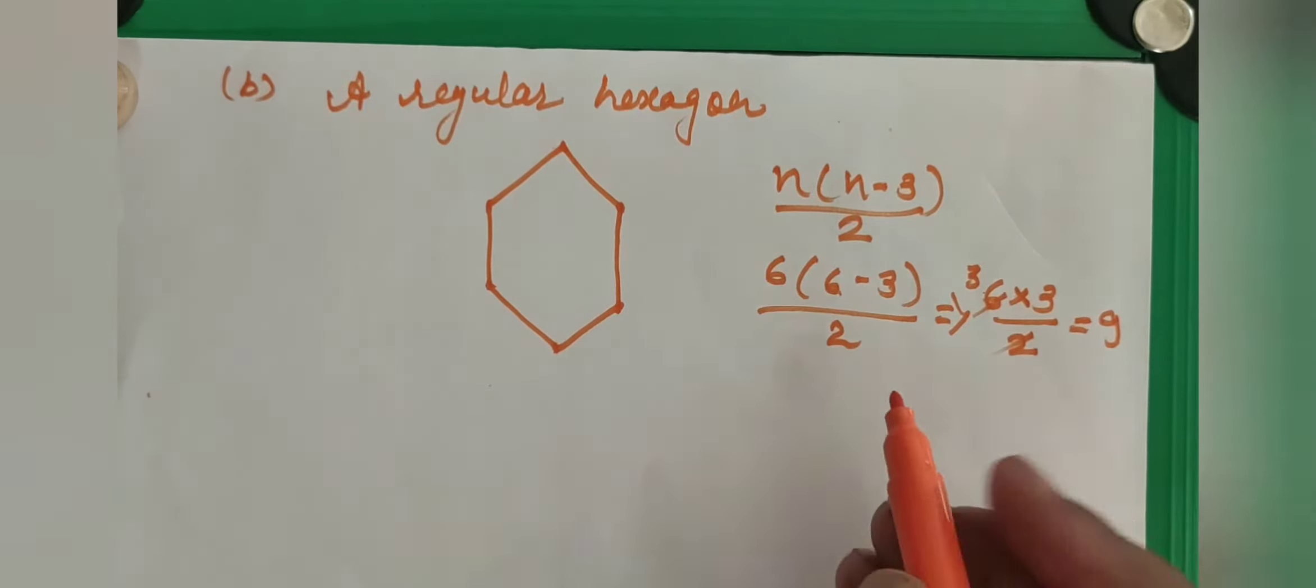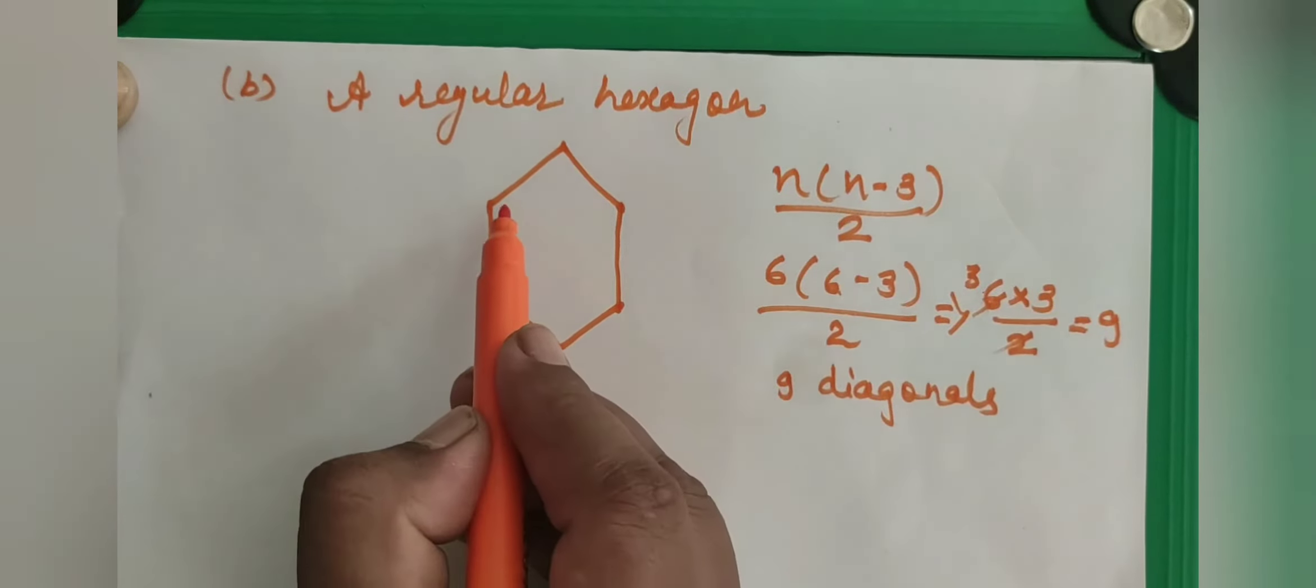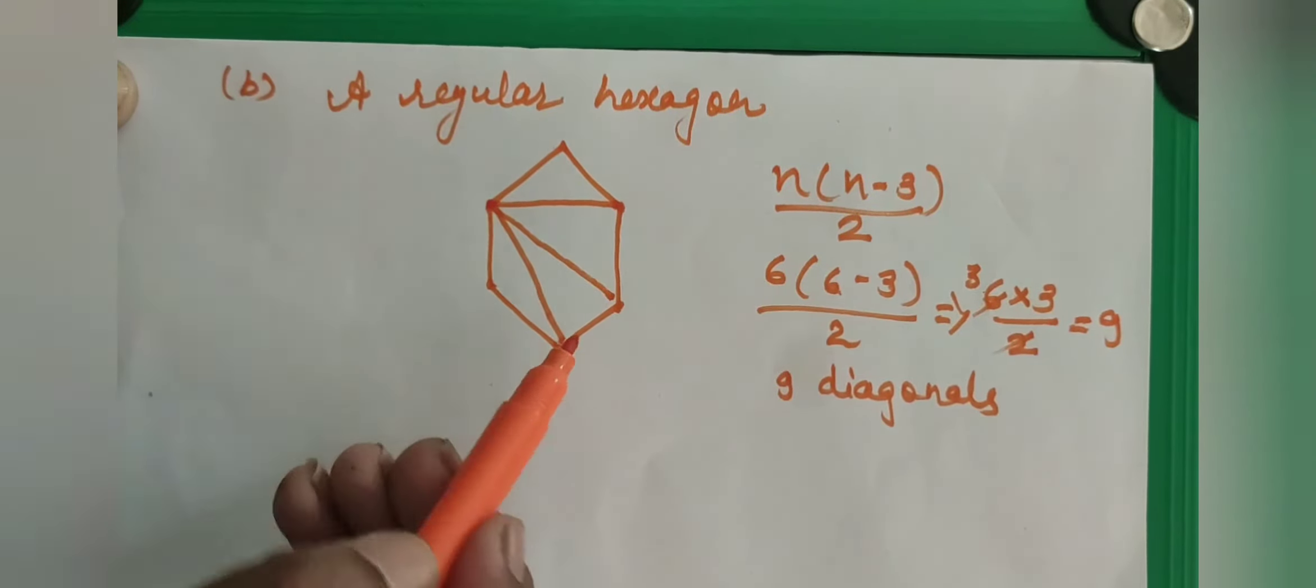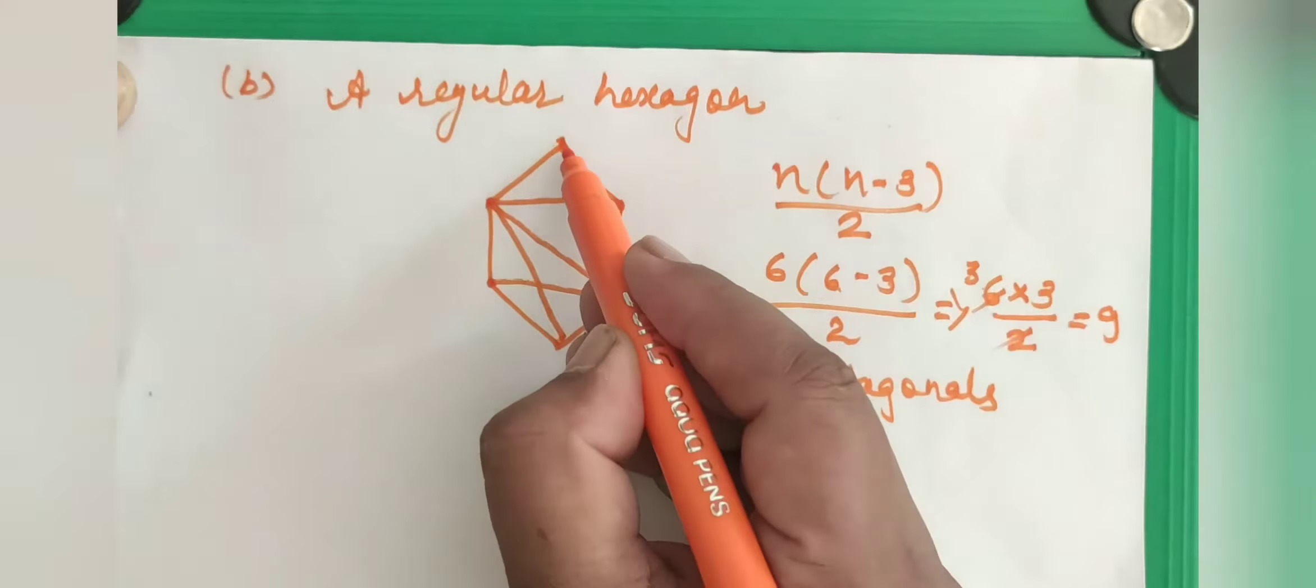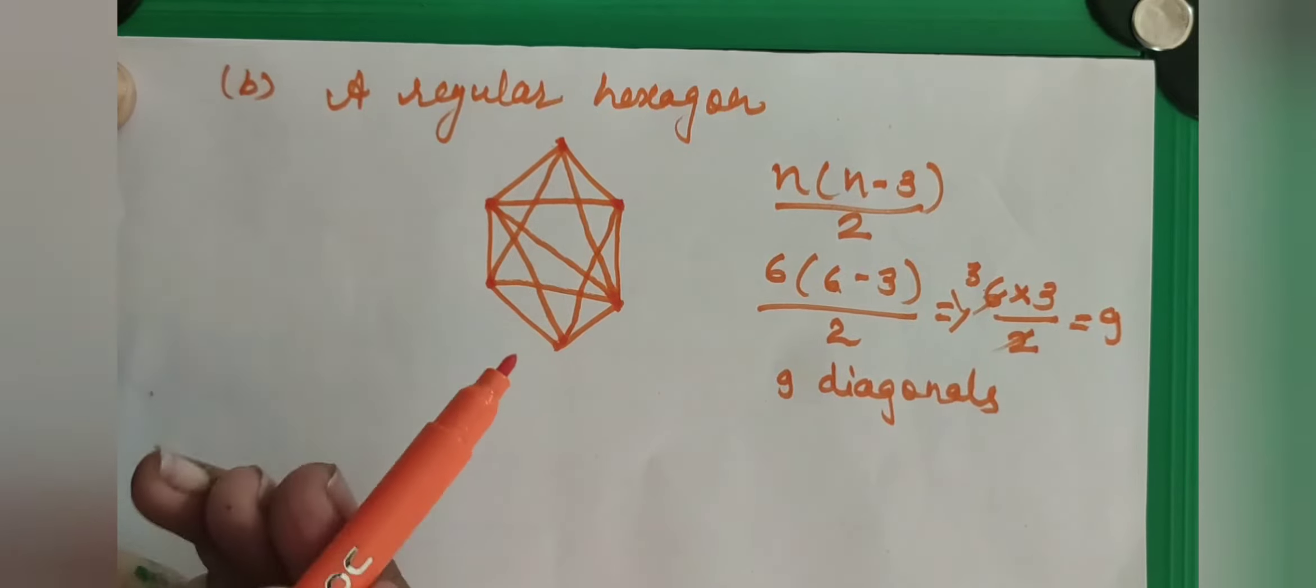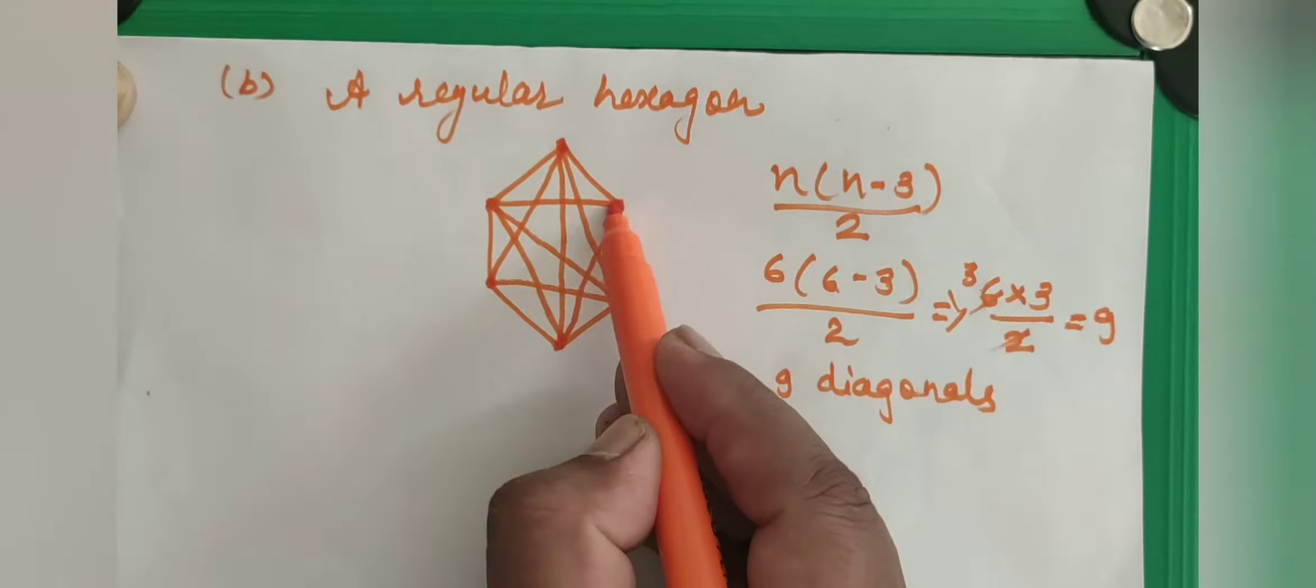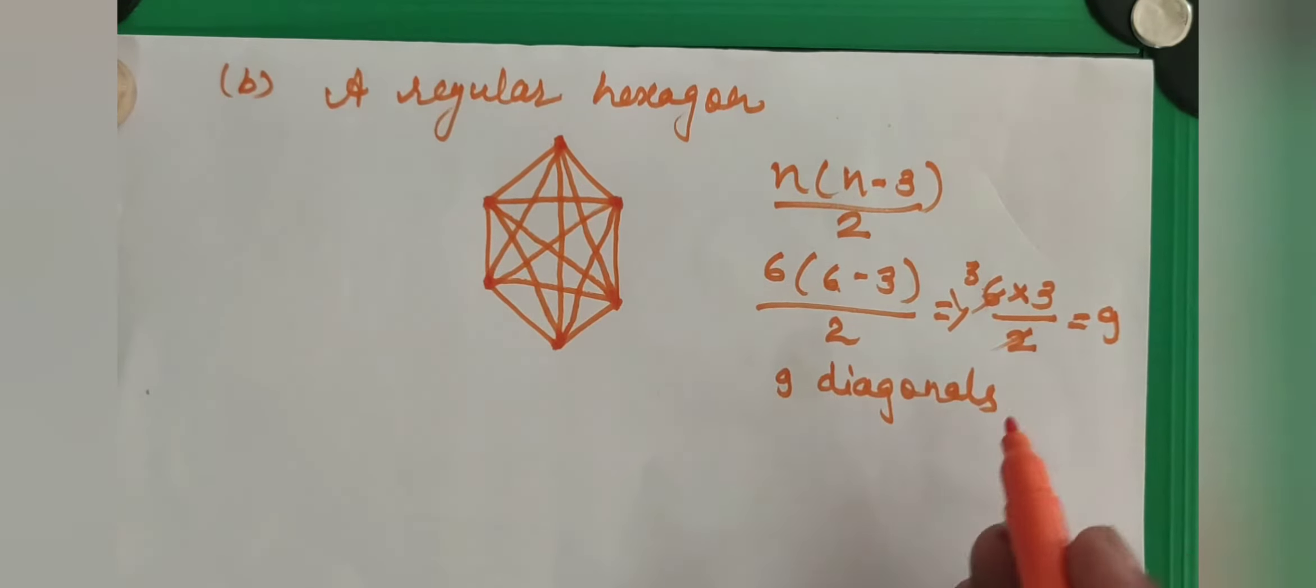So there are 9 diagonals. Now you see, join the non-consecutive sides. 1, 2, 3, 4, 5, then 6, then 7 and 8 and 9. There are total 9 diagonals we have got. So the answer we got is 9 diagonals.